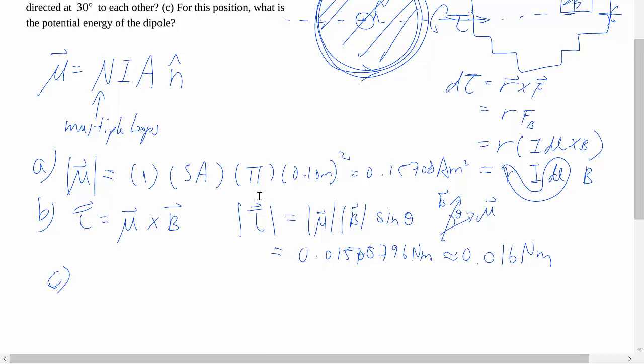And then for part c, very similar to the electric dipole moment, we can also define the potential energy of the loop inside this magnetic field because it would want to align itself.